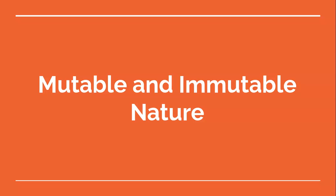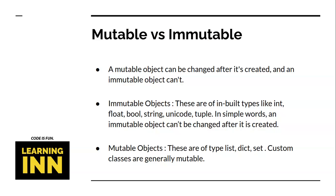Now we will look at mutable and immutable nature. A mutable object can be changed after it's created. An immutable object cannot be changed. Examples of immutable types include int, float, boolean, string, unicode, and tuple. Examples of mutable objects include list, dictionary, sets, and any custom classes you create in your projects.